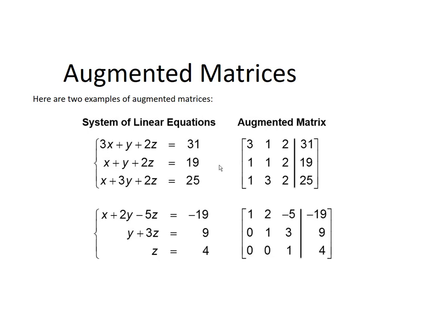We would take all the coefficients, and this would become the augmented matrix with the first row of 3, 1, 2, 31. Again, those are the coefficients and the constants for the first equation. Our second row is 1, 1, 2, 19, which are the coefficients and constant of the second equation. And our third row is 1, 3, 2, 25, which are the coefficients and constant of the third equation.